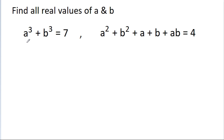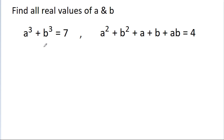In this video, we have given that a⁴ + b⁴ is equal to 7, and a² + b² + a + b + ab is equal to 4, and we have to find all real values of a and b.